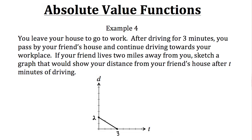Assuming you continue to drive at the same rate, you'll pass your friend's house and get continually farther from it. After another 3 minutes of driving, you'll be 2 miles away again. So you start off 2 miles away, get closer and closer to your friend's house until you reach it, then pass it and drive further away as you get closer to your workplace. That's an example of a real-life situation where the graph of your distance makes an absolute value function.